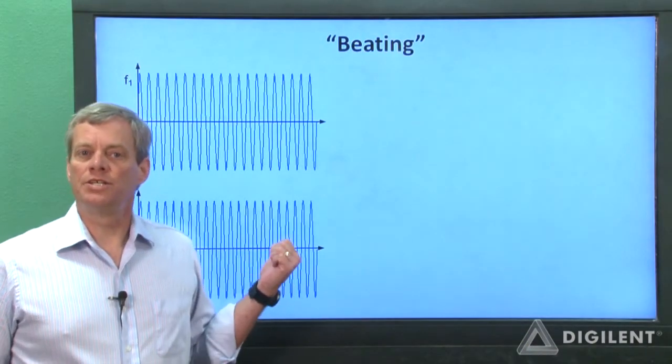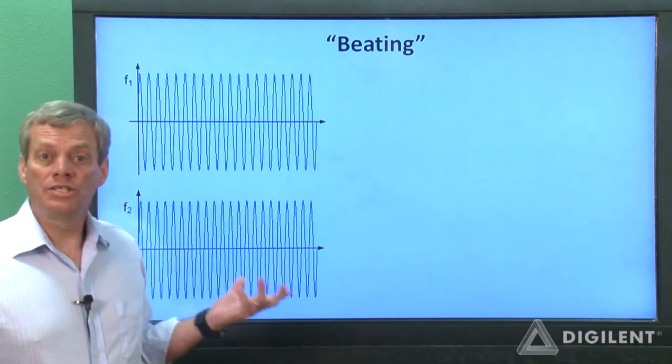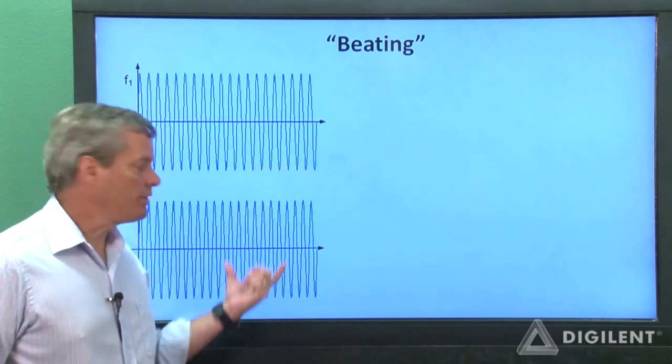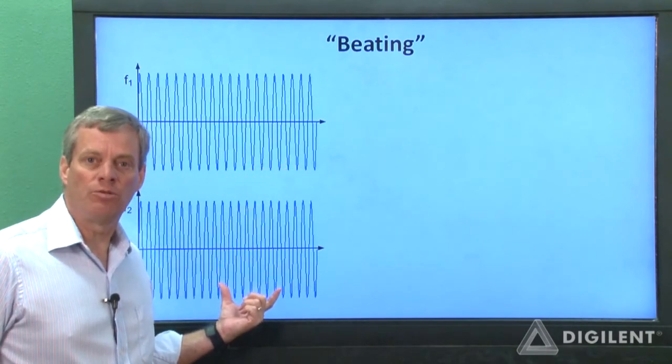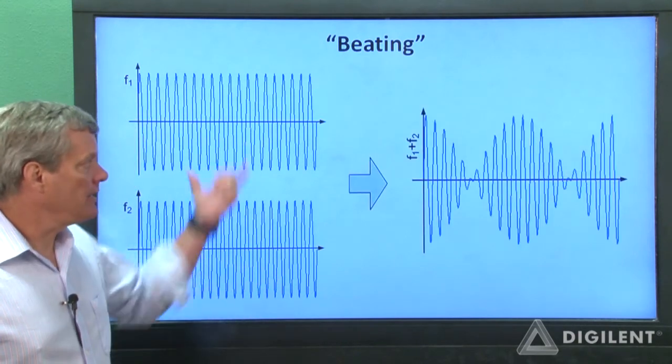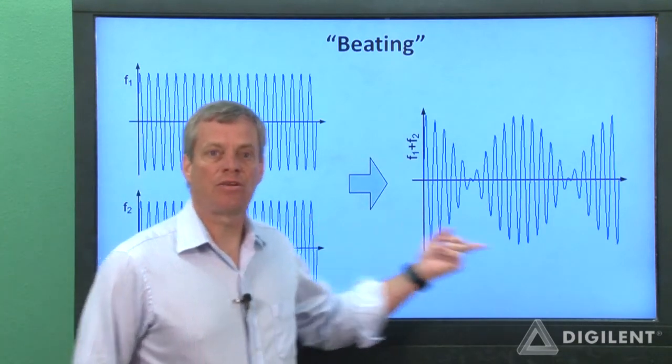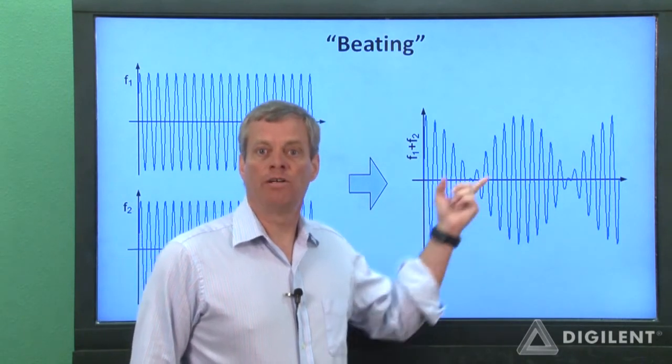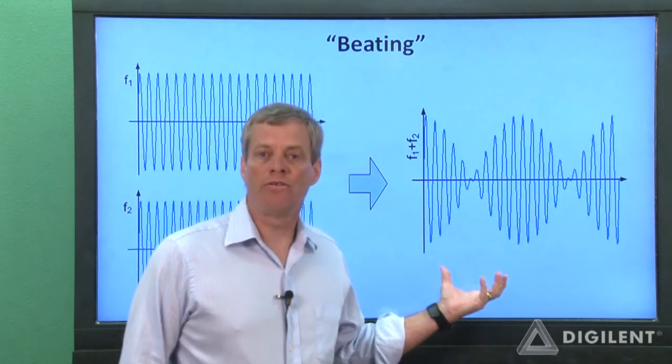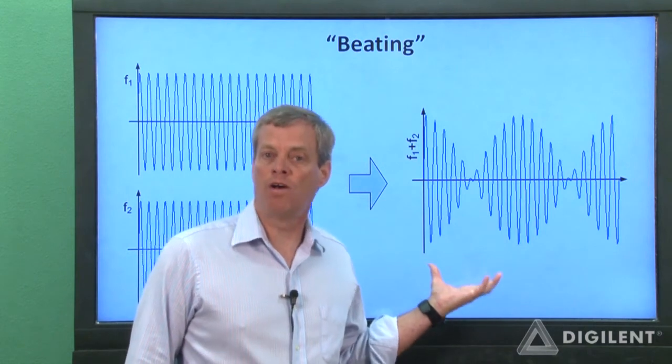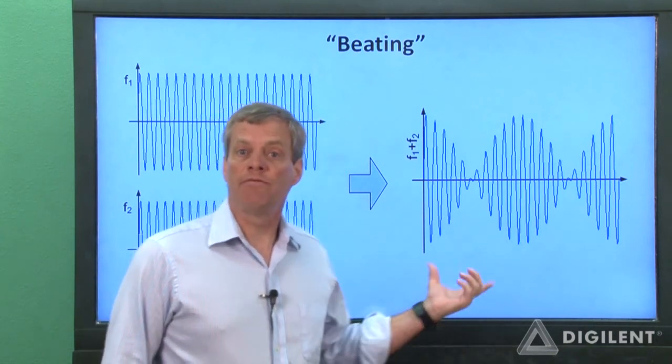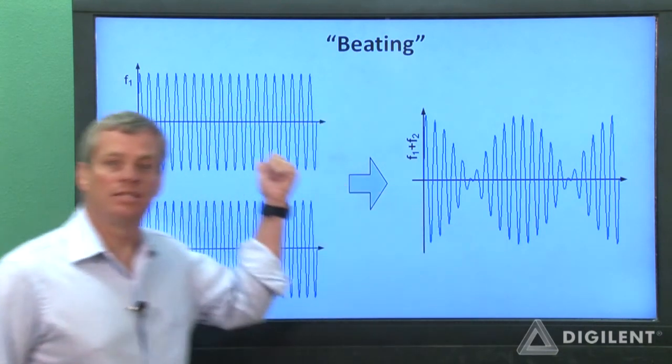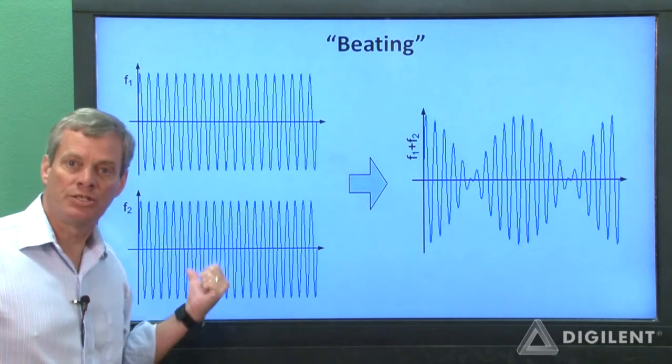Here's a graphical representation of the beating process. Our signal starts out as two sinusoidal signals with slightly different frequencies. Mathematically, if we add these two signals together, we get this signal. The amplitude of this signal varies sinusoidally, so we'll hear this as a sinusoidal variation in volume. The frequency of this volume change will be the same as the difference in frequency of the two original signals.